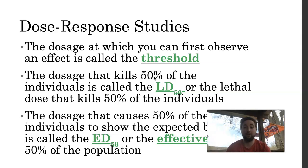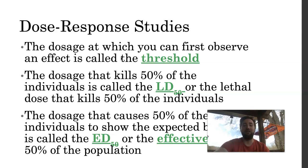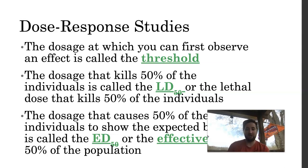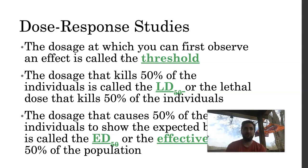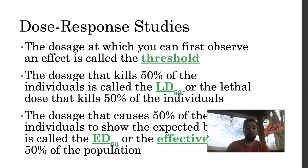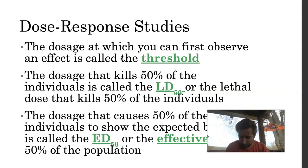All chemicals should have an LD50 — you can Google the LD50 for literally any chemical. Water has an LD50; caffeine has an LD50. You can also have an LC50, which is the lethal concentration that kills 50% of the population. The only difference is dosage versus concentration. The concentration is what you're giving them; the dose is actually what they're receiving — usually less, because their body is metabolizing some of it. The ED50 is the effective dose that causes 50% of individuals to show the expected behavior.